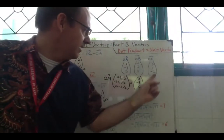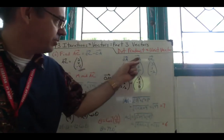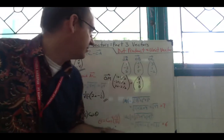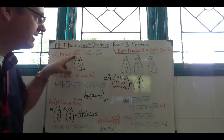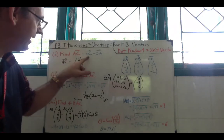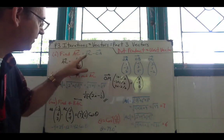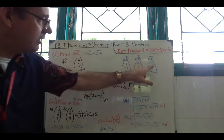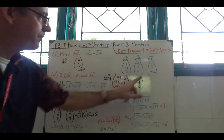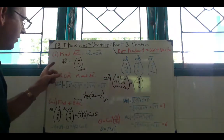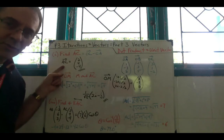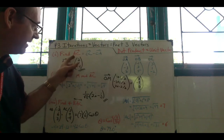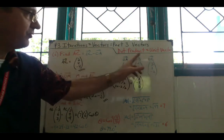AC = OC - OA (end minus start): (3-1, 1-(-3), -2-2) = (2, 4, -4). That's worth one mark and is straightforward, but remember it's end minus start: OC minus OA. For the second part, we need the unit vector of OM, where M is the midpoint of AC.